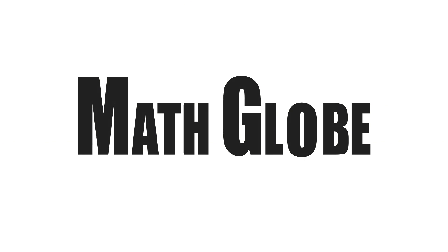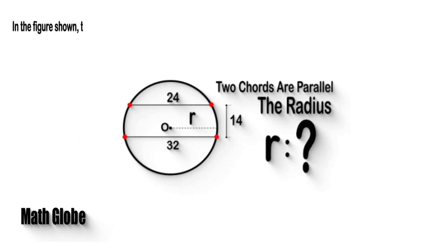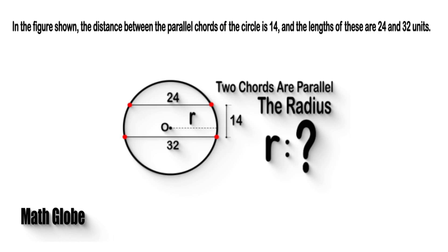Hi this is MathGlobe. In the figure shown, the distance between the parallel chords of the circle is 14, and the lengths of these are 24 and 32 units. Can you find the radius of the circle?